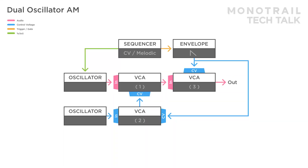An untuned modulation oscillator will lead to more raw and beating sounds, but you can send a copy of the 1V per octave sequence to the second oscillator if you like the harmonic ratio between the two oscillators to be maintained.